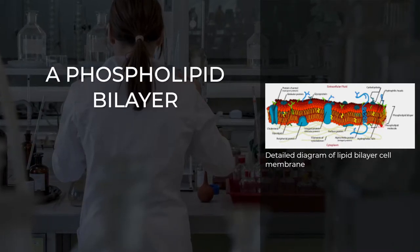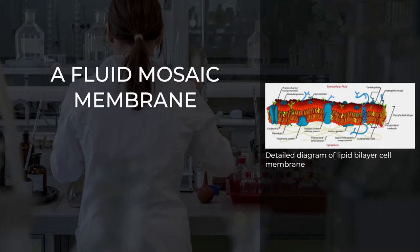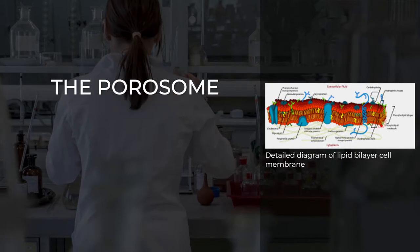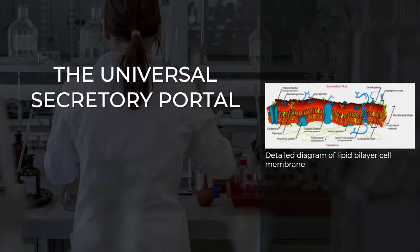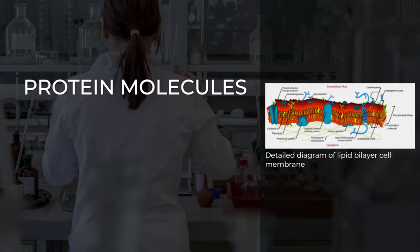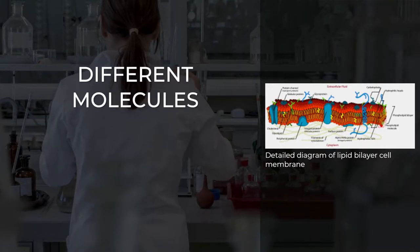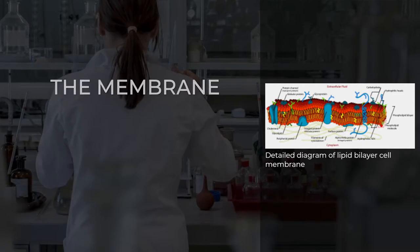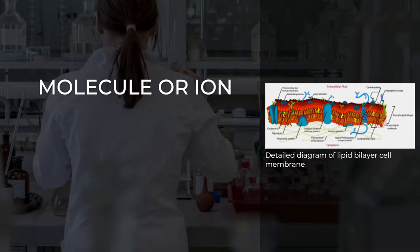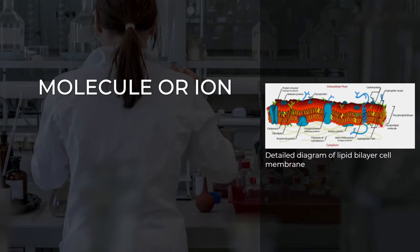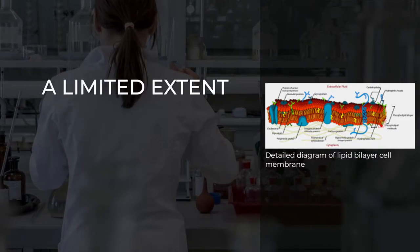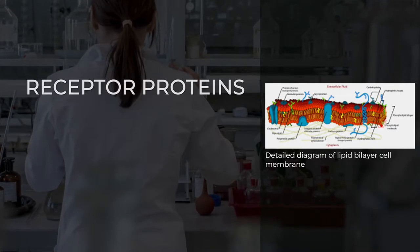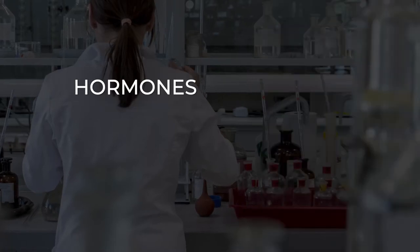Hence, the layer is called a phospholipid bilayer, or sometimes a fluid mosaic membrane. Embedded within this membrane is a macromolecular structure called the porosome, the universal secretory portal in cells, and a variety of protein molecules that act as channels and pumps that move different molecules into and out of the cell. The membrane is semi-permeable and selectively permeable, in that it can either let a substance, molecule or ion, pass through freely, pass through to a limited extent, or not pass through at all. Cell surface membranes also contain receptor proteins that allow cells to detect external signaling molecules such as hormones.